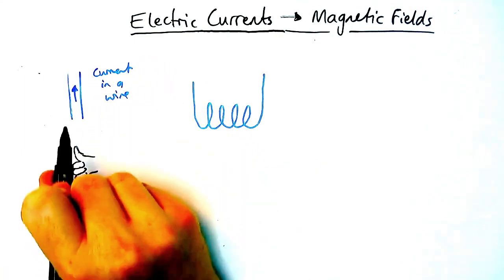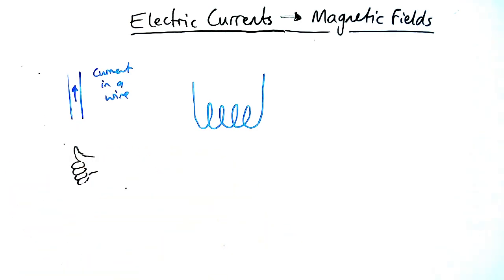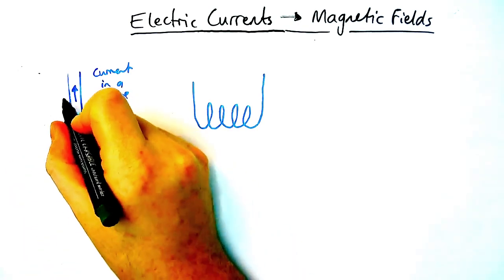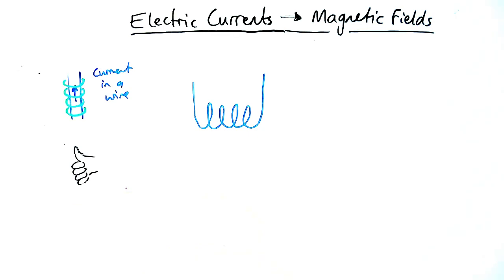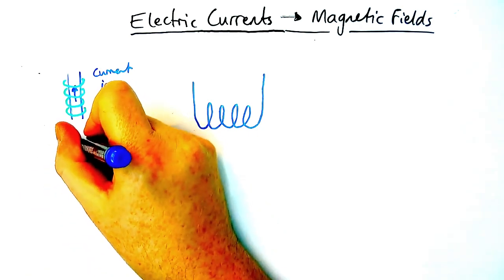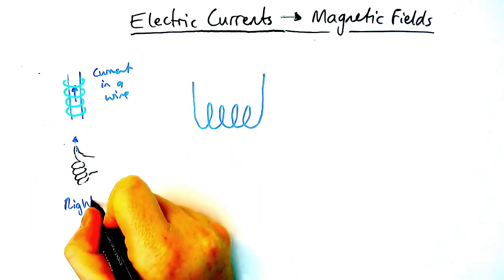In this example here there is a wire, just a straight wire with a current flowing upwards. Around the edge of the wire, even though you might not be able to see it, there are these small magnetic fields formed in a circular pattern around the wire.